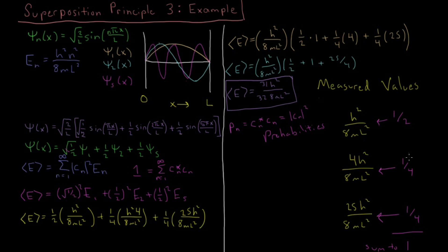These are all the possible energies we can measure. They have these probabilities, and because they have these probabilities, the weighted average of them becomes this expectation value. This is an example of how the superposition principle works in practice: what values you can possibly measure, how likely they are, and what the average will be over a large number of measurements of similar systems.